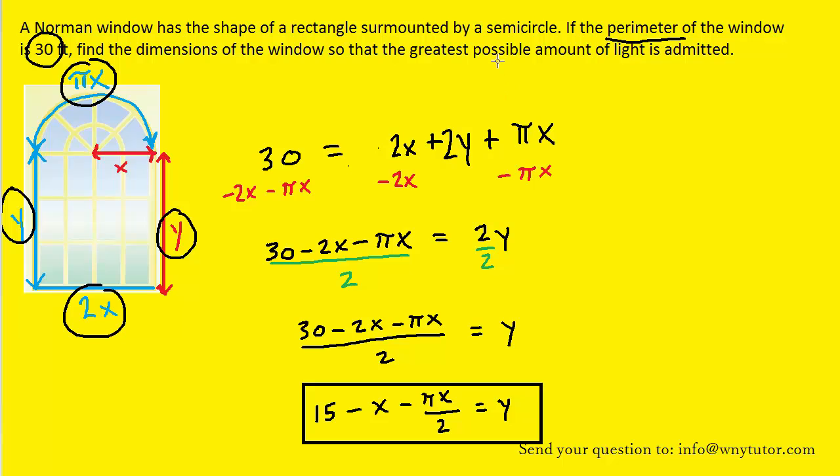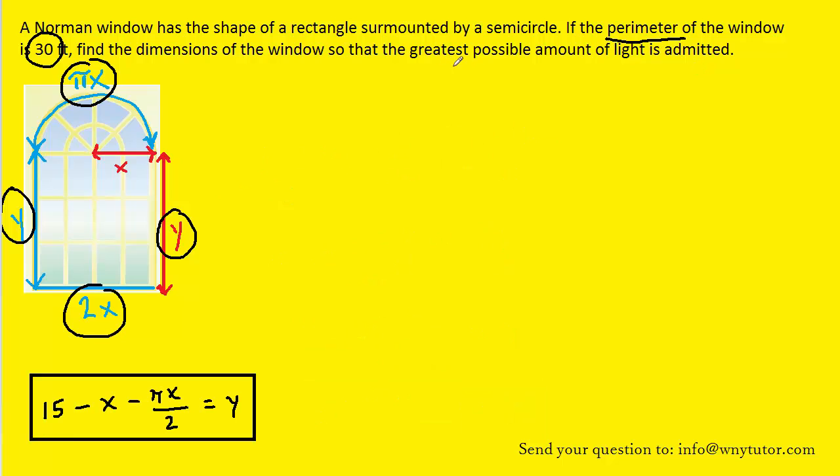And the next aspect of the problem is to consider how we can determine the greatest possible amount of light that's being admitted. When they say the greatest possible amount of light, what they mean is that they want the area of this entire window to be maximized. That should make sense, because if you want to let a lot of light in, you want the area of this window to be as large as possible. So we need an equation for the area of the entire window. The window was made up of a rectangle and a semicircle, and we know the area of a rectangle is base times height.